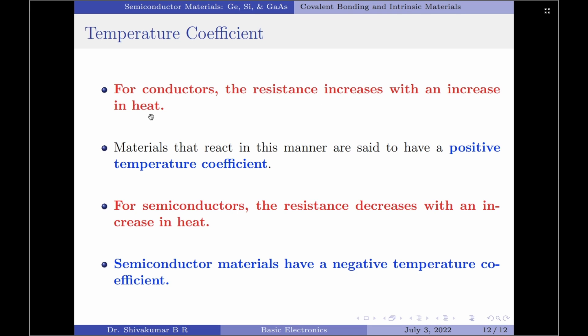This is because the number of carriers in a conductor do not increase significantly with temperature. Materials that react in this manner are said to have a positive temperature coefficient. On the other hand, for semiconductors, the resistance decreases with an increase in heat.